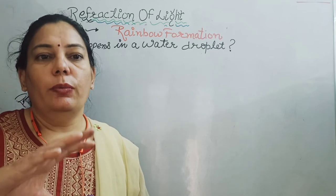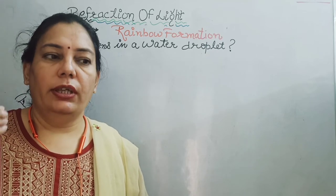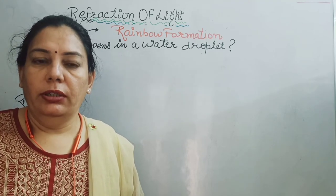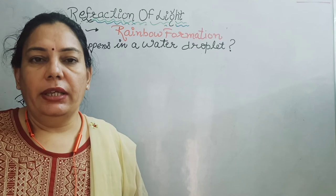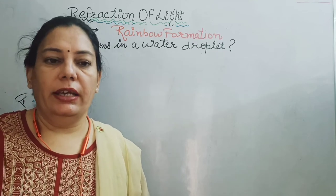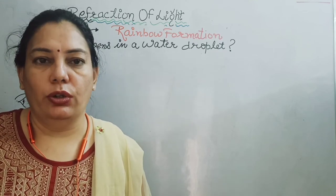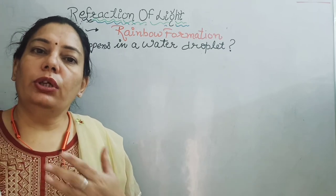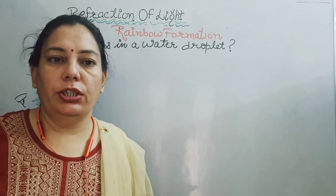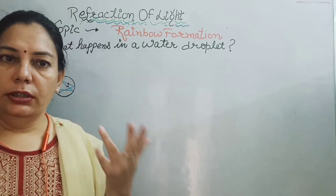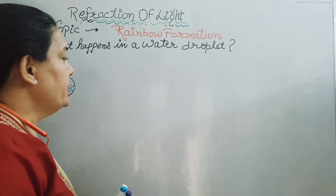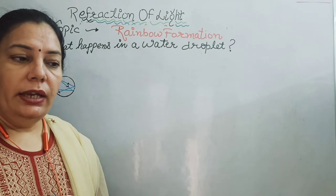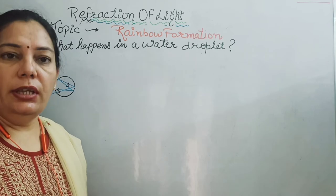Rainbow is an optical phenomenon. If we talk about science, it is an optical phenomenon which can be explained by both reflection of light and refraction of light. To understand how a rainbow is formed, we need to understand both these concepts. The water droplet acts as a prism and forms the rainbow.